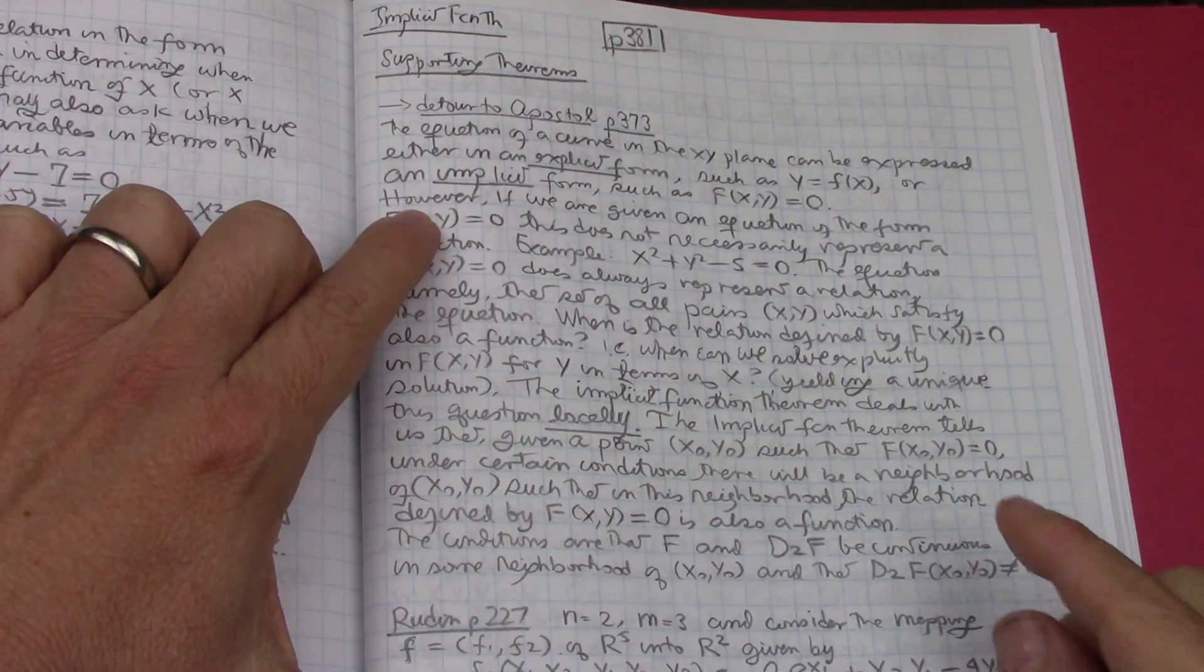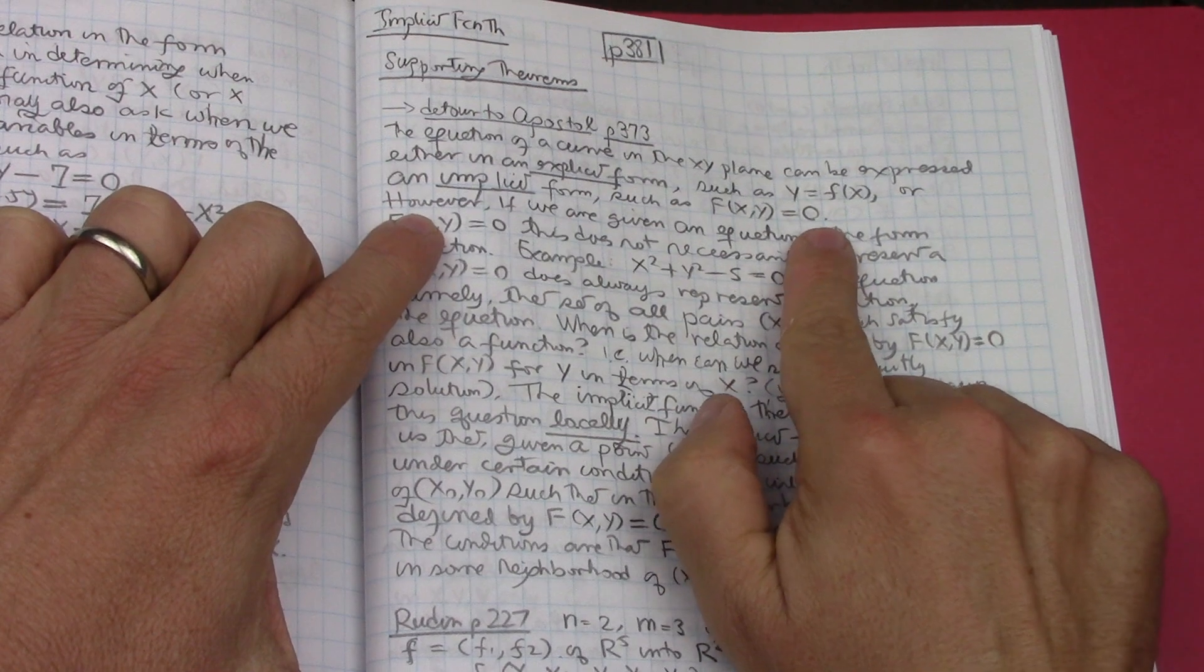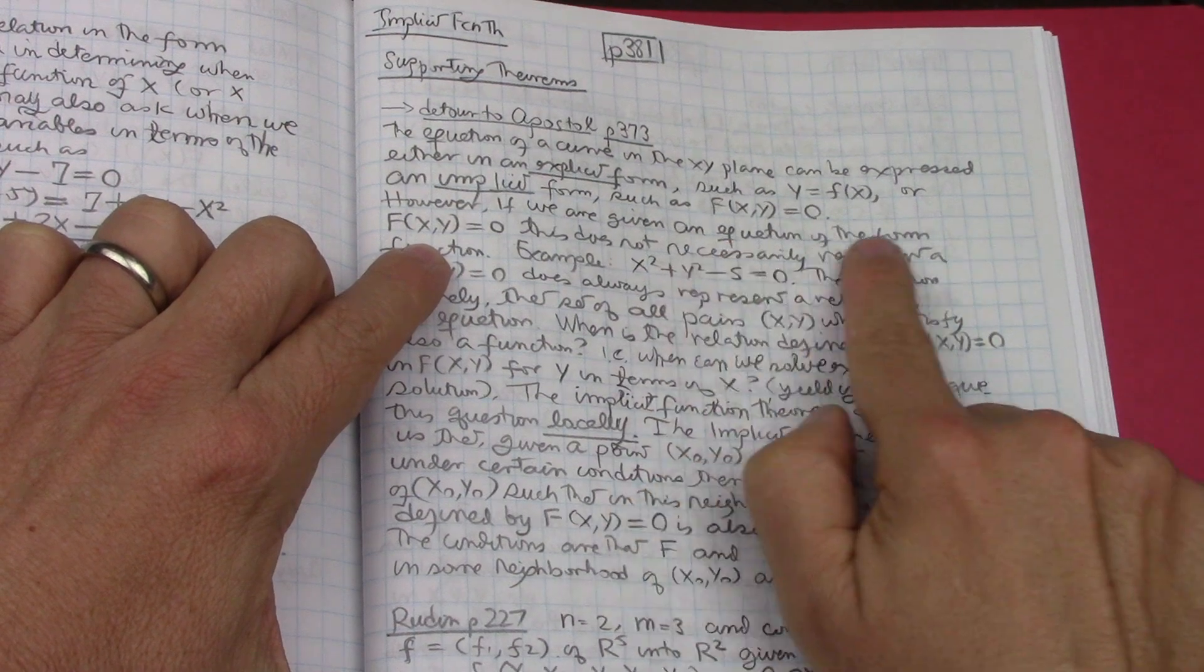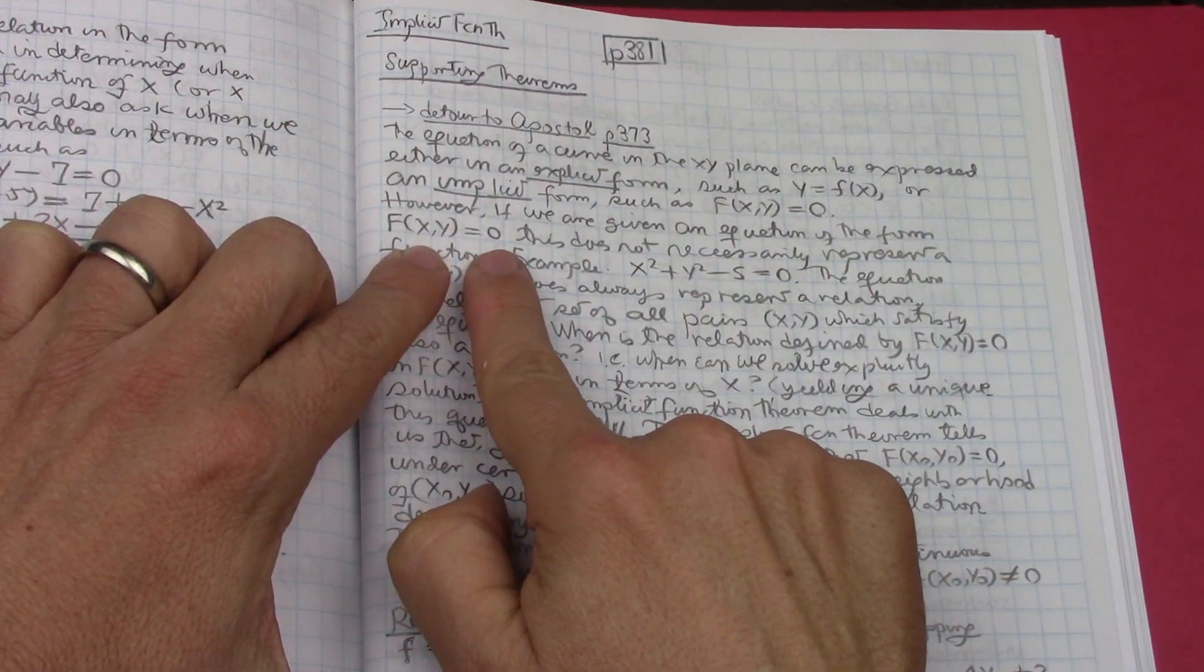That's why it's called the implicit function, such as f(x,y) equals zero. However, if we're given an equation of the form f(x,y) equals zero.